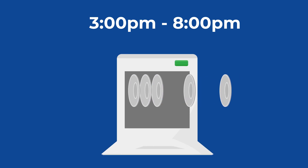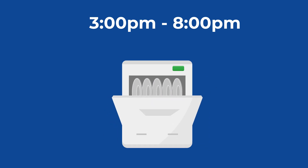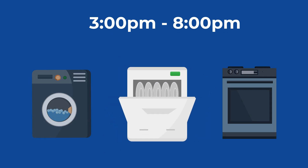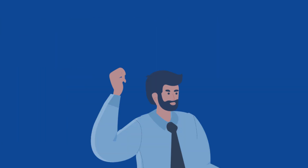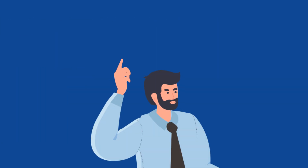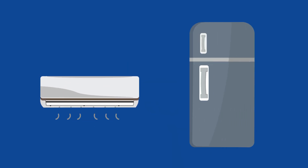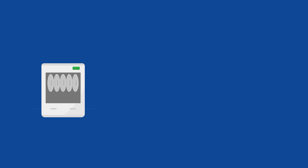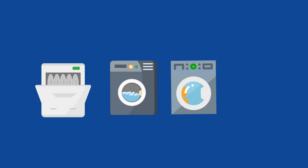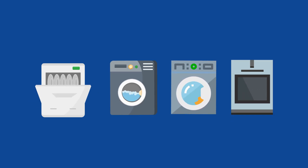For example, if you need to wash dishes during on-peak, keep your power usage down by only running the dishwasher. Keep in mind some of your largest energy hogs are running constantly, like your air conditioner and fridge. The worst thing you can do is run the dishwasher, washing machine, dryer, and stove at the same time.